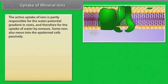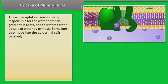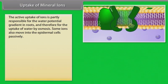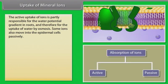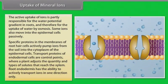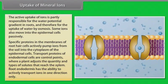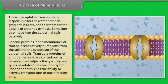The active uptake of ions is partly responsible for the water potential gradient in roots, and therefore for the uptake of water by osmosis. Some ions also move into the epidermal cells passively. Ions are absorbed from the soil by both passive and active transport. Specific proteins in the membranes of root hair cells actively pump ions from the soil into the cytoplasm of the epidermal cells.